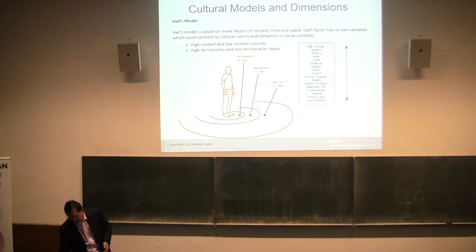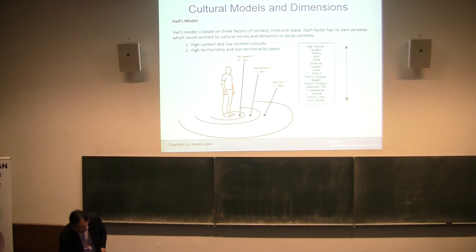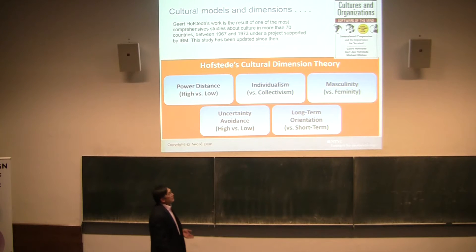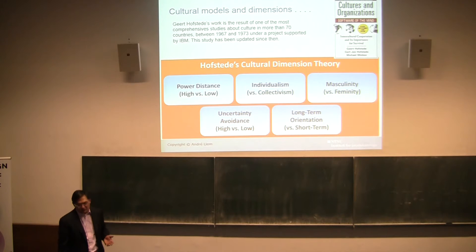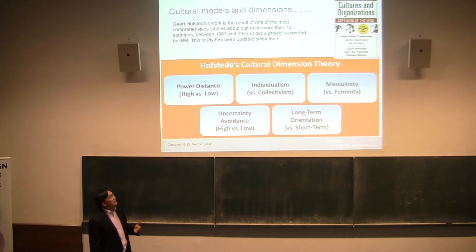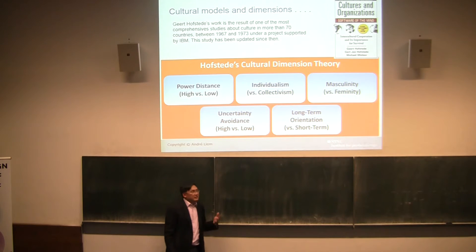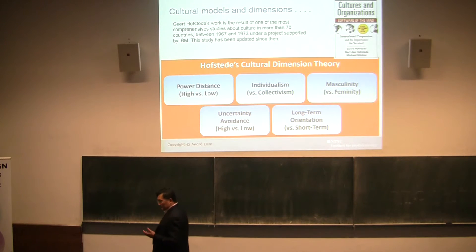One famous person from the Netherlands — Hofstede — developed five cultural dimensions: power distance, individualism, masculinity, and others, explained in his book 'Cultures and Organizations: The Software of the Mind,' which looks at different dimensions of culture from a business perspective.